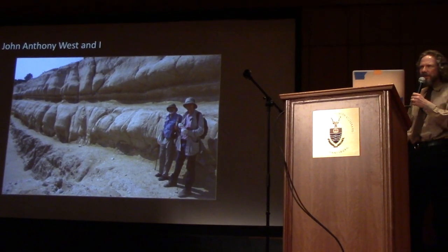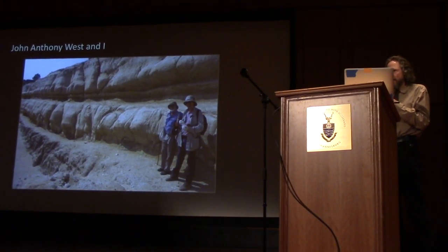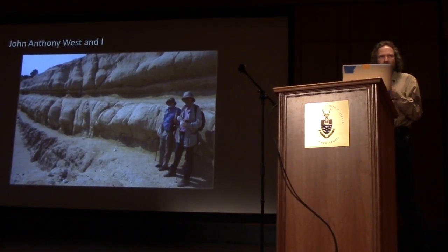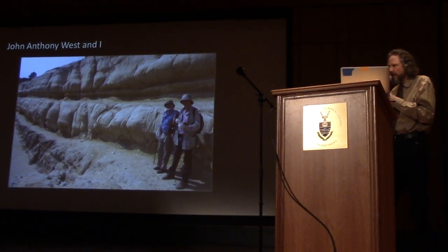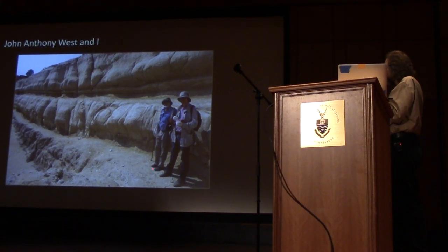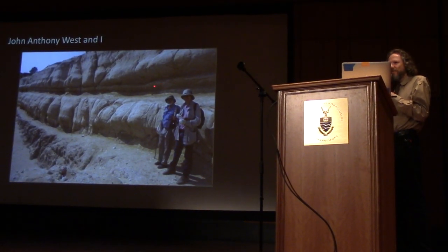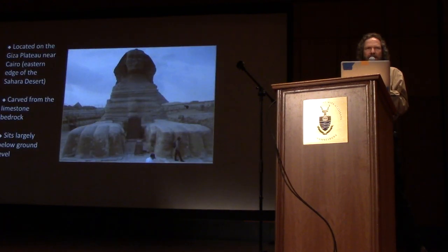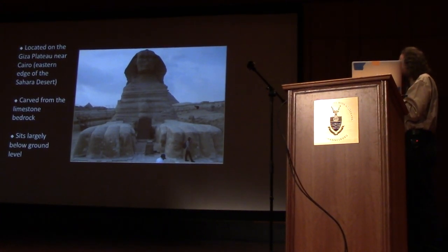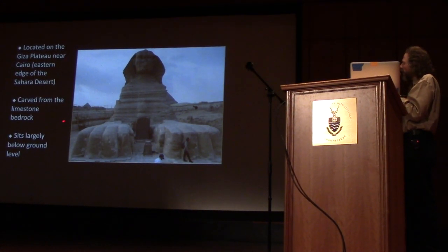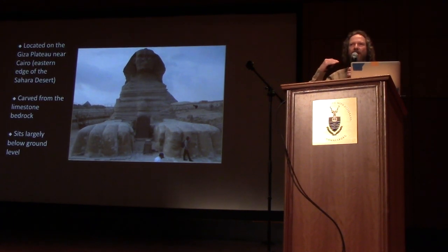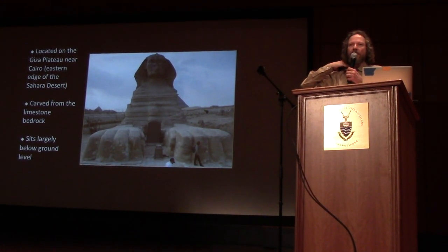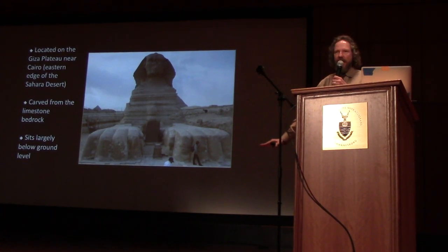John Anthony West — he's written books like Serpent in the Sky, and is a proponent of the Symbolist school of ancient Egypt founded by Schwaller de Lubicz. Here is John Anthony West and an earlier incarnation of myself in about 1990, standing in the Sphinx enclosure. The Sphinx sits in what's known as the Sphinx enclosure — it's carved out of solid bedrock, and only the head was initially above the level of the plateau. To carve the body, they actually carved down into the bedrock.